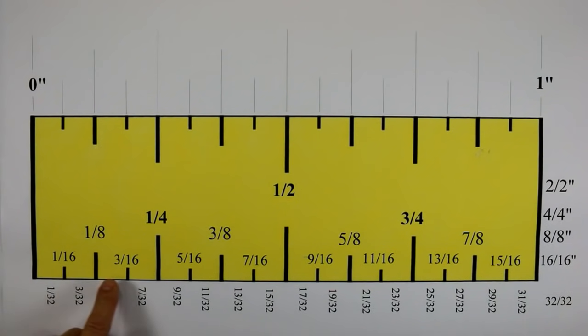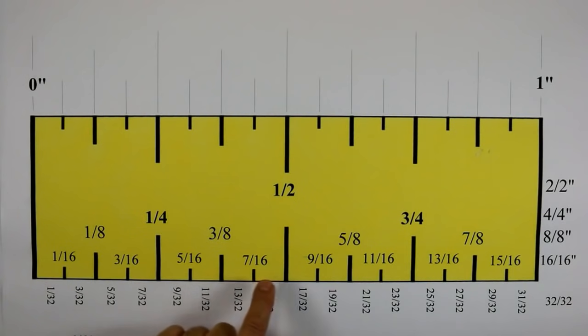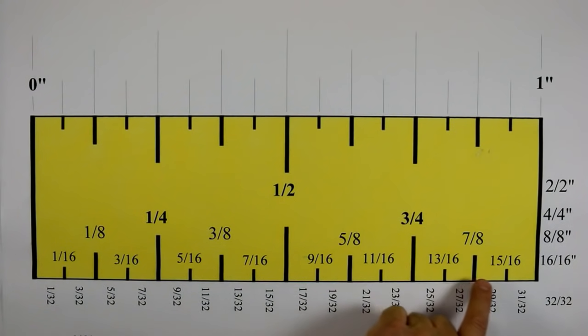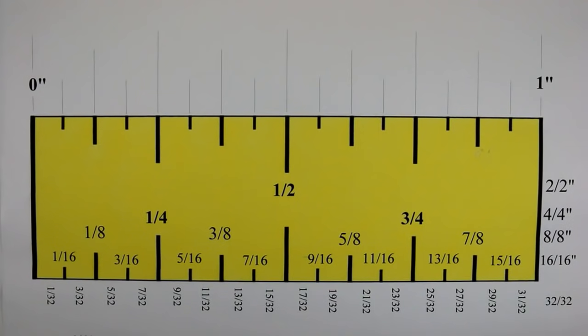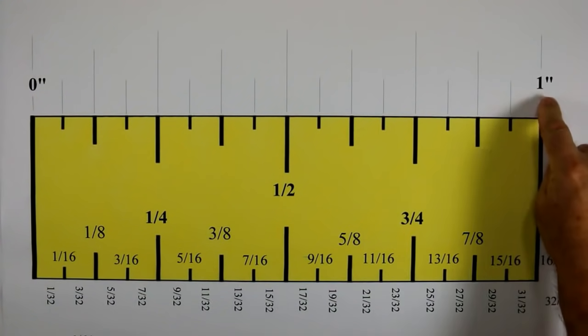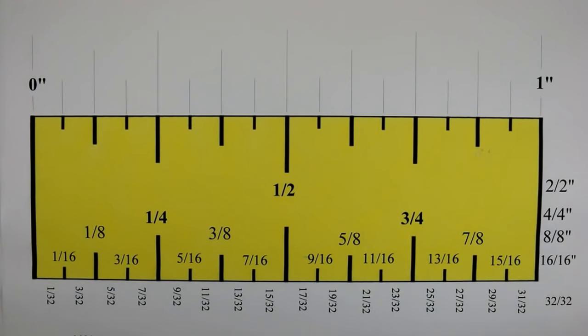Counting them out: one, two, three, four, five, six, seven, eight, nine, ten, eleven, twelve, thirteen, fourteen, fifteen sixteenths. And sixteen sixteenths equals an inch.